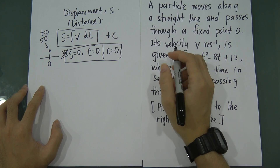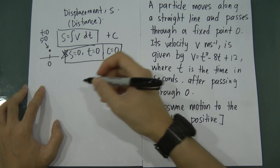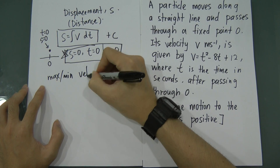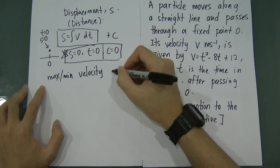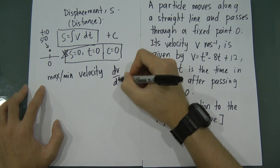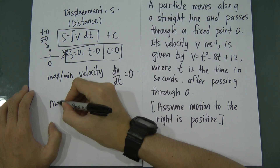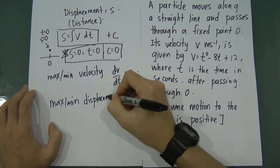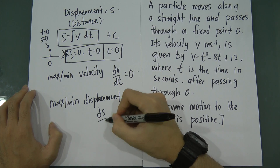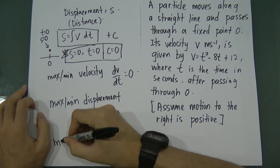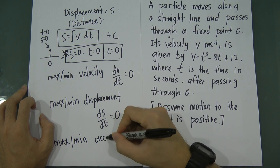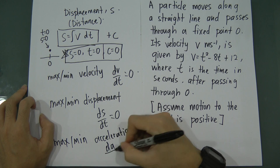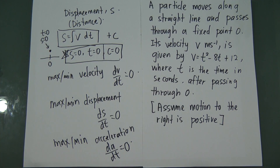The question will say something like 'passes through a fixed point O', meaning time starts calculating after passing through O. So at fixed point O, t equals zero and s equals zero. You still have to prove it. Also, for maximum or minimum velocity, you differentiate v with respect to time and set it equal to zero. Similarly for maximum or minimum displacement, differentiate s with respect to t and set to zero.